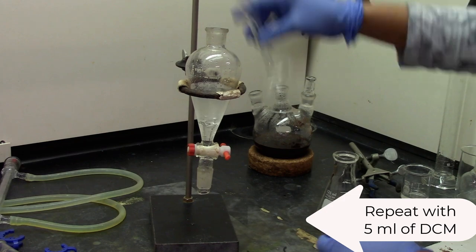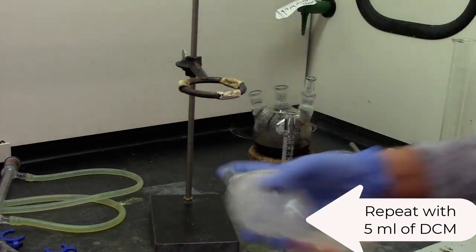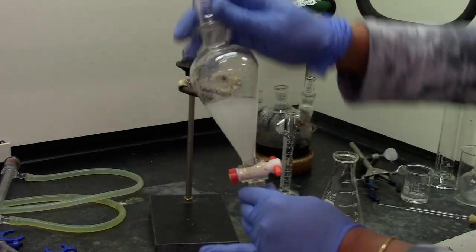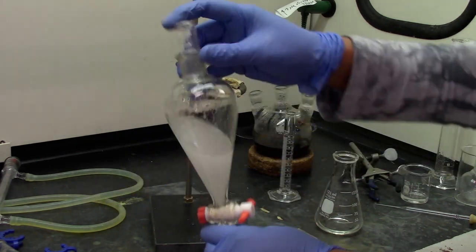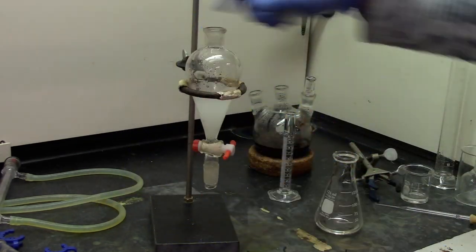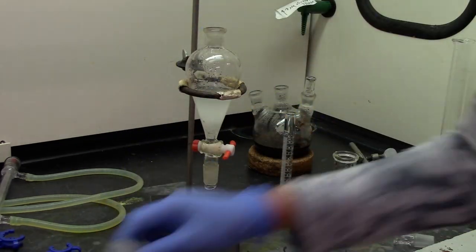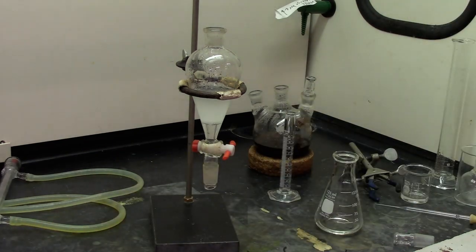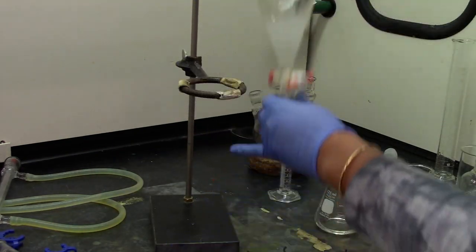Add 5 ml of dichloromethane or DCM, give it a good mix, vent and let the two layers separate. Once separate, collect the bottom layer into the same unmeted flask. Repeat it a third time with 5 ml of dichloromethane.